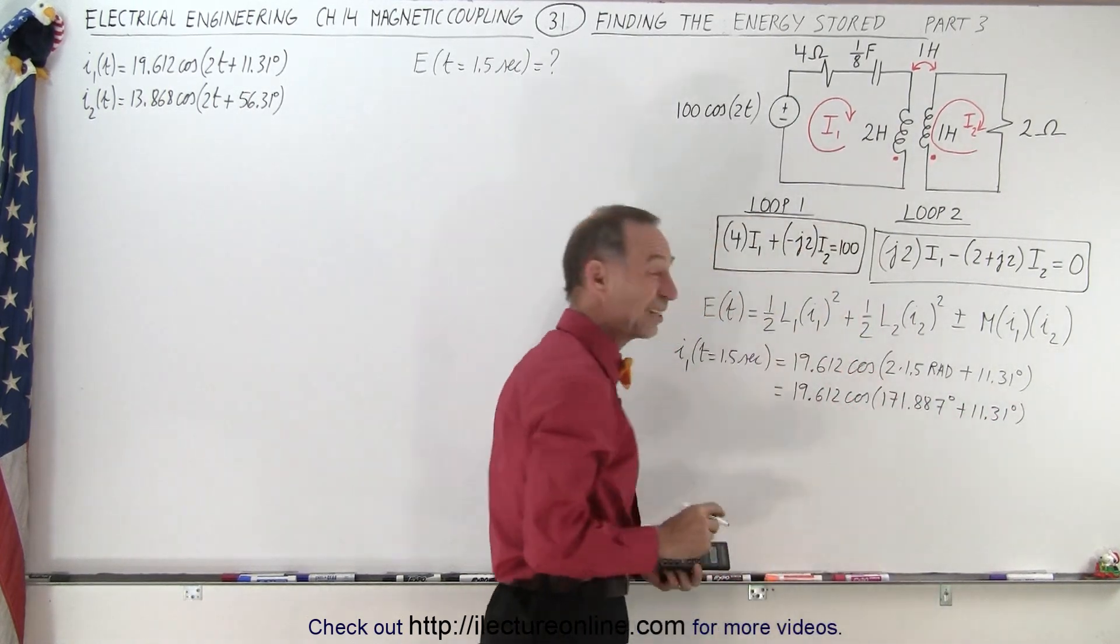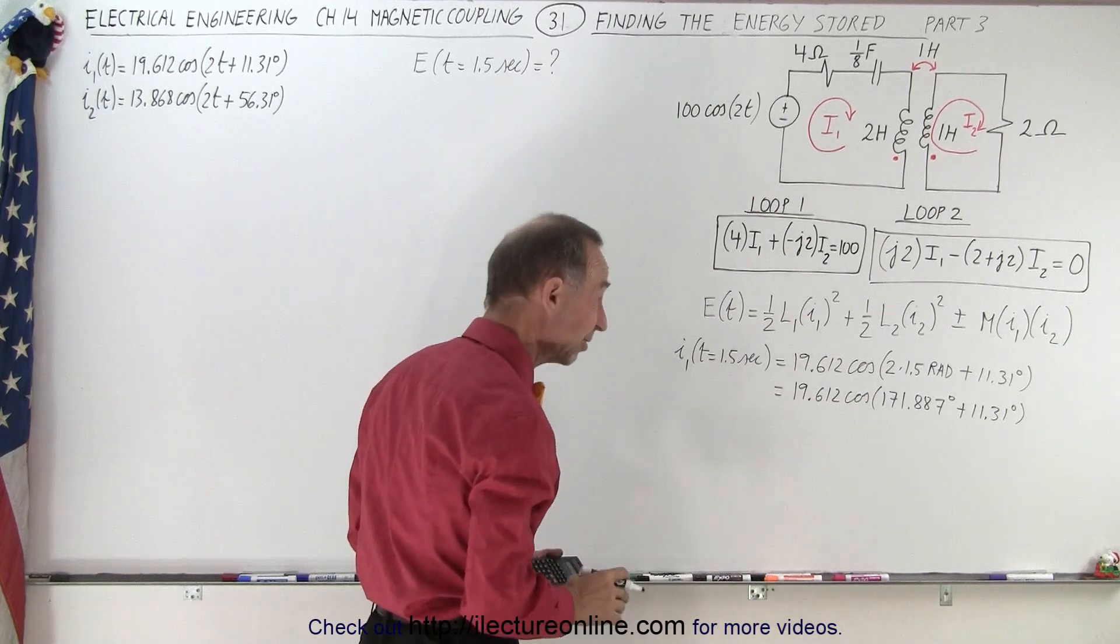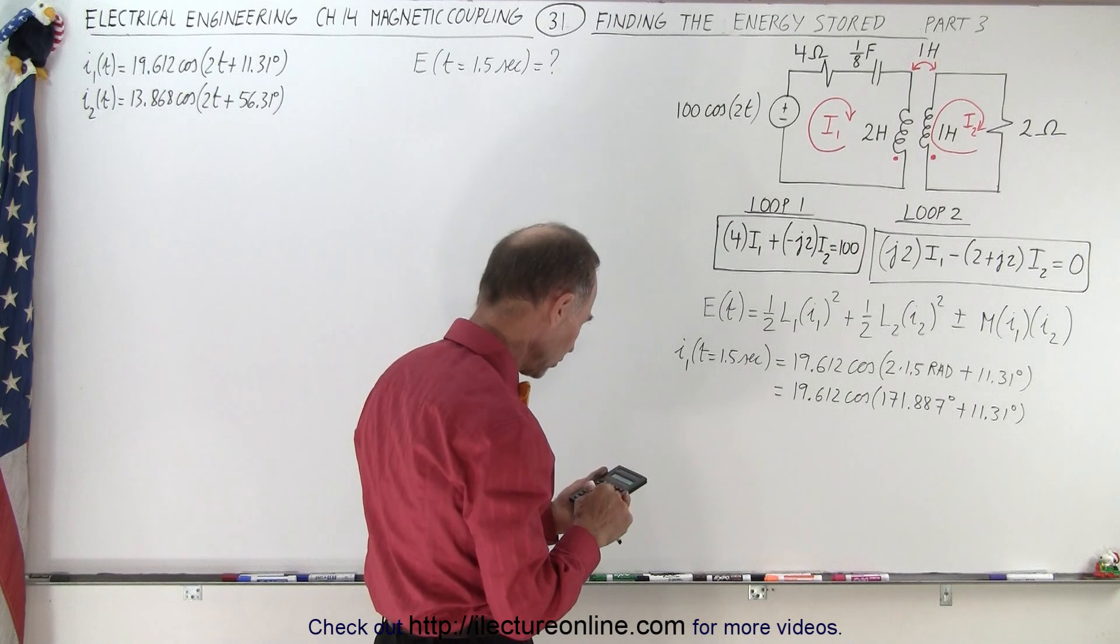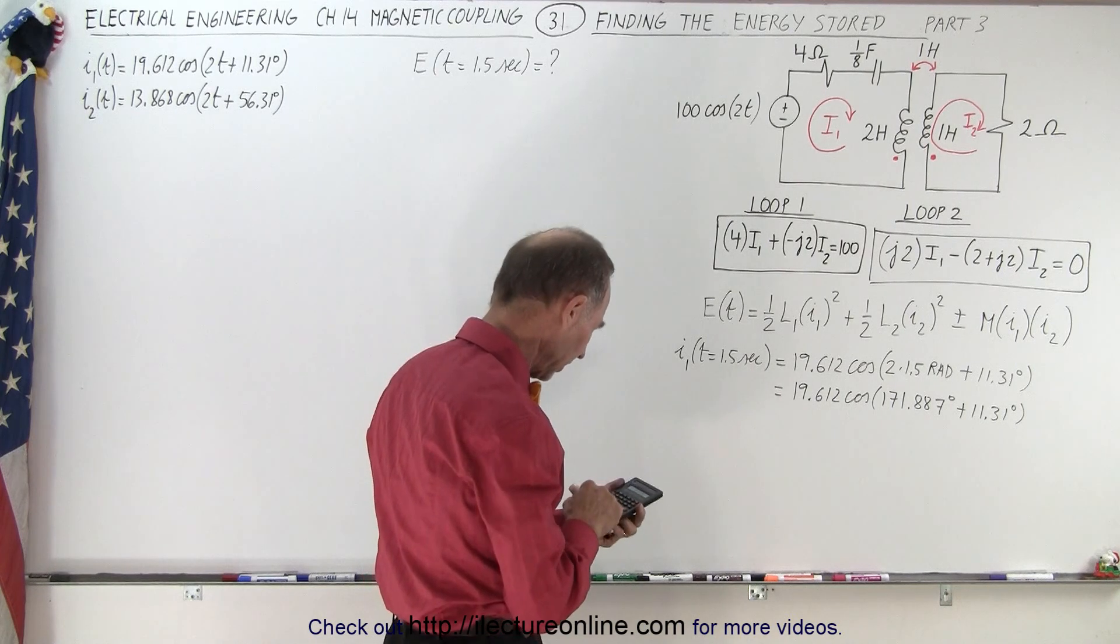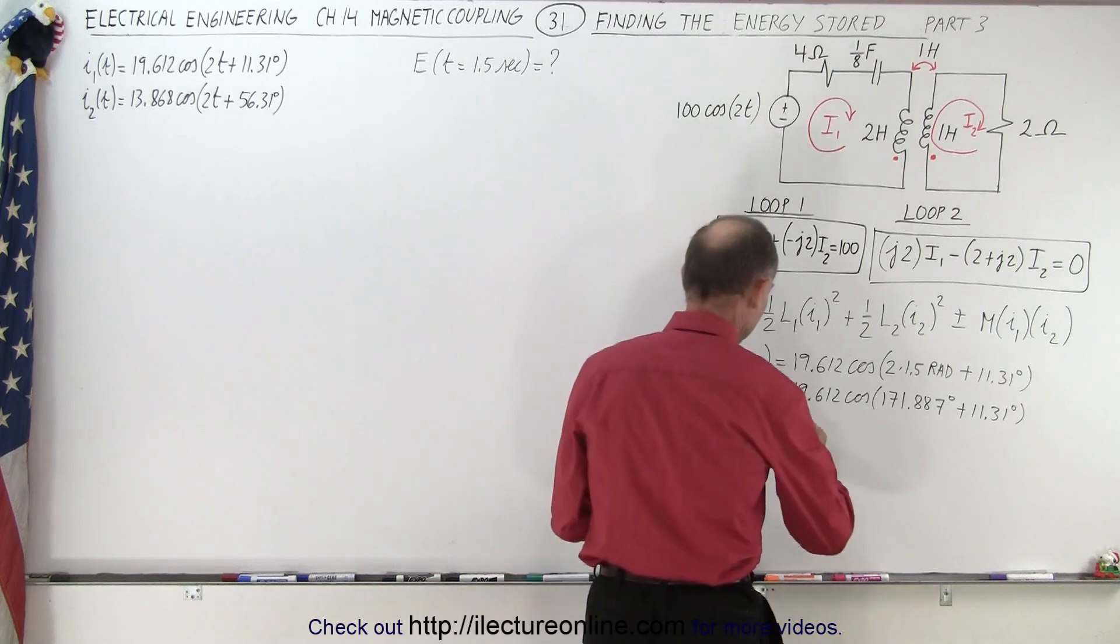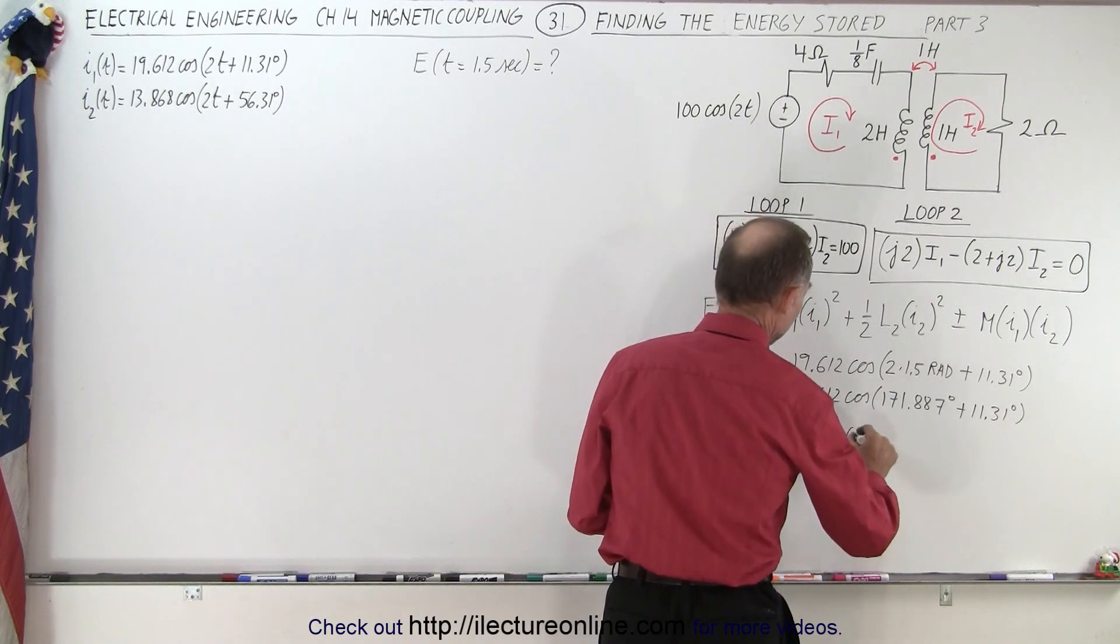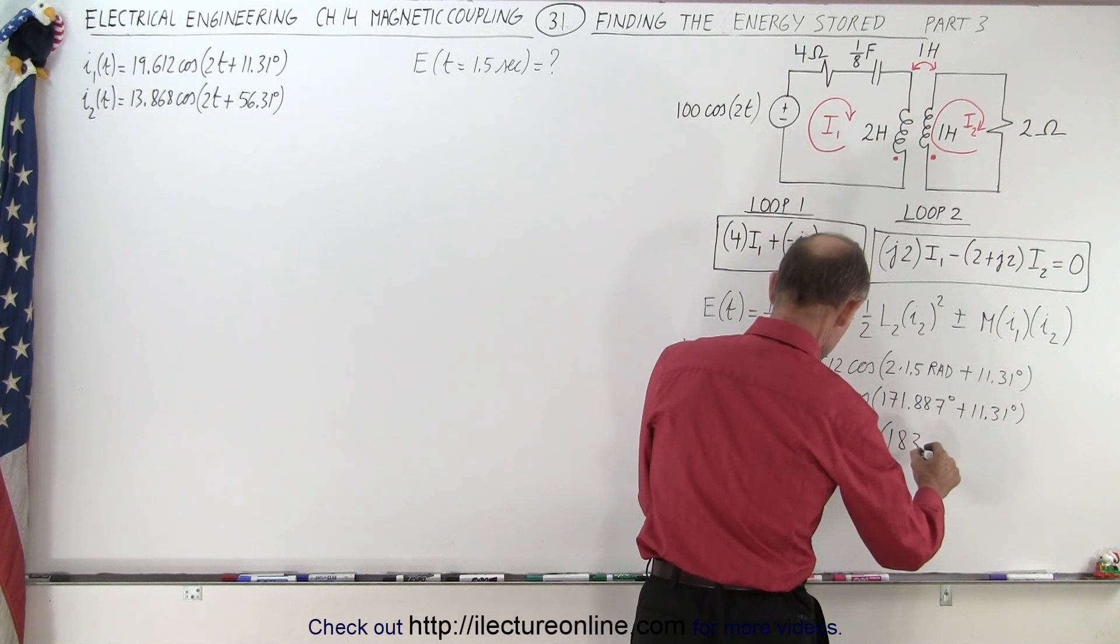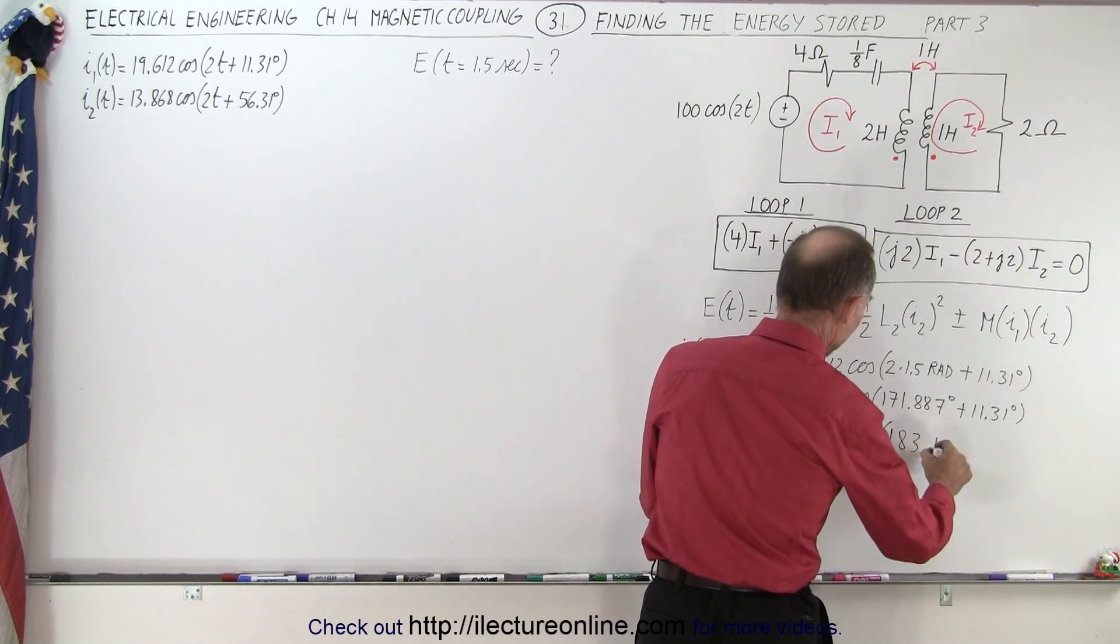So this becomes 19.612 times the cosine of 171.887 degrees plus 11.31 degrees. That's almost 180, the cosine of 180 is almost negative 1. We're going to add plus 11.31 to that, so we end up with 19.612 times the cosine of 183.197 degrees.